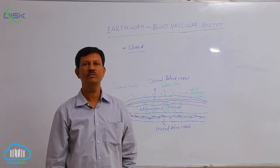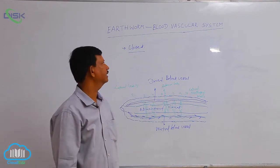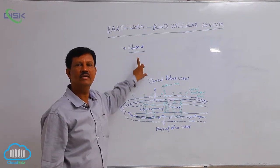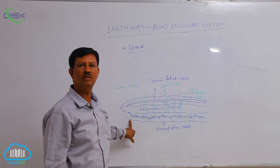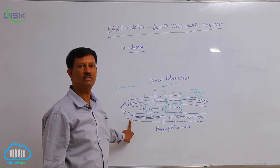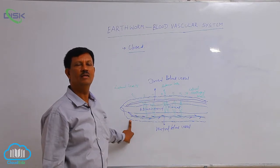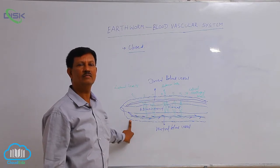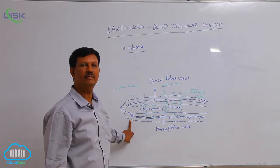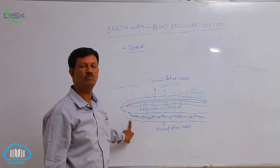When blood flows in the blood vessels, it is known as a closed blood vascular system. In earthworm, blood flows in the blood vessels, hence it is a closed blood vascular system. In some animals, blood does not flow in blood vessels but is found in the body cavity — that is known as the open blood vascular system. Example: Arthropoda.